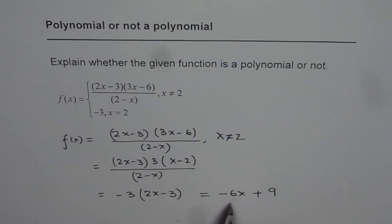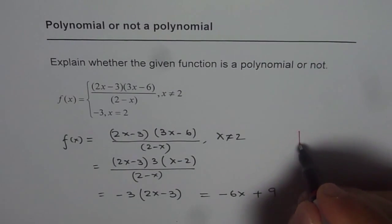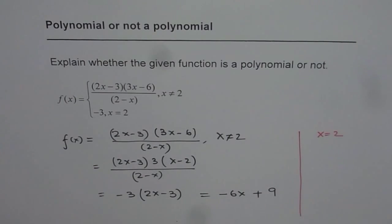So basically it is a polynomial of degree 1. So what we get here is this function is a polynomial of degree 1. Now what we need to analyze here is what happens at x equals to 2. If x is equal to 2 then what happens? Do we get minus 3 from here? Then it is a continuous function, otherwise it will be a discontinuous function.